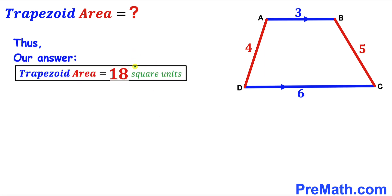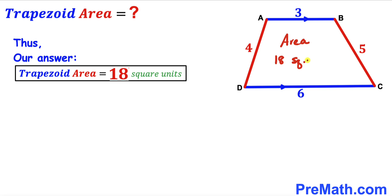After all the calculations, the area of trapezoid ABCD turns out to be 18 square units — that's our final answer. Thanks for watching, and please don't forget to subscribe to my channel for more exciting videos.